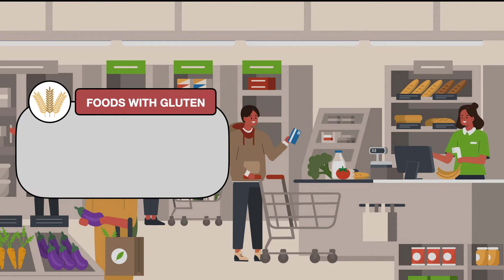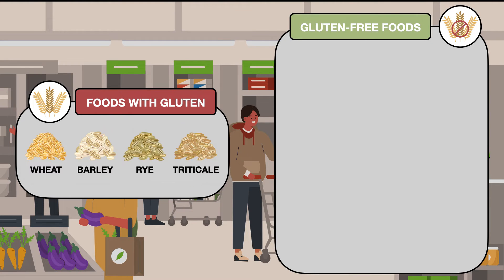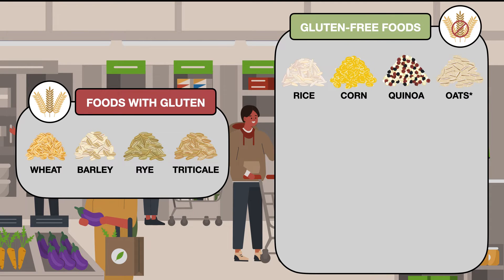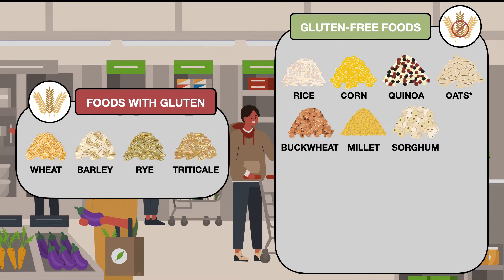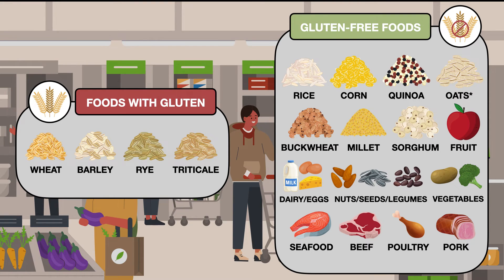Foods with gluten include the grains wheat, barley, rye, and triticale. Gluten-free foods include rice, corn, quinoa, and oats, as well as buckwheat, millet, and sorghum. It also includes fruit, vegetables including potatoes, nuts, seeds, and legumes, dairy products and eggs, seafood, beef, poultry, and pork.